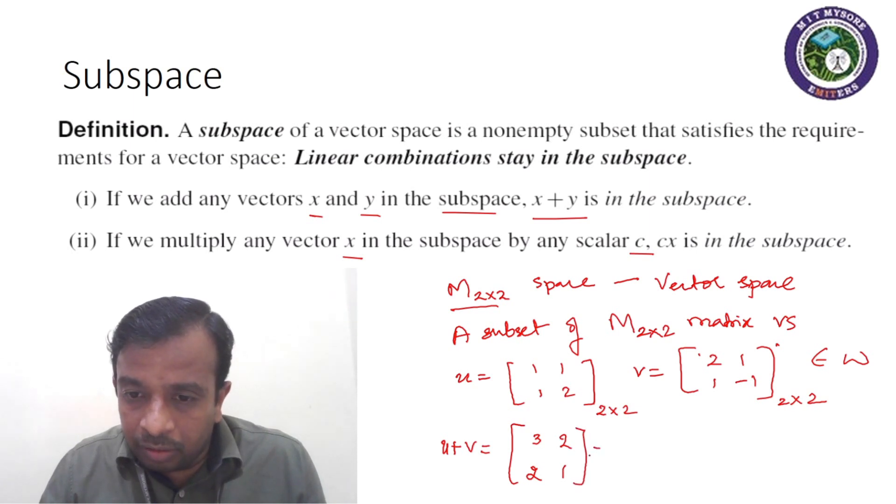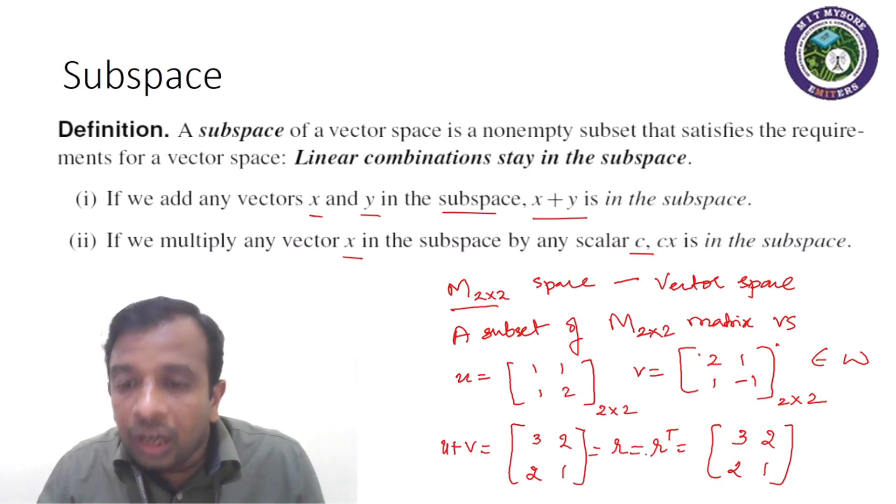If I do corresponding elements addition: 3, 2, 2, and 2 minus 1 addition is 1. So if I term this as resultant R, then you see that R transpose is again 3, 2—that is, interchanging column to row. Again, second column as second row: 2, 1.